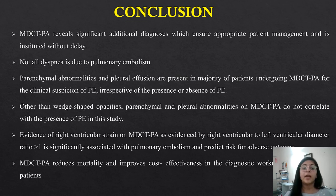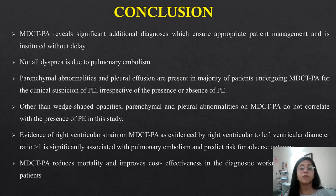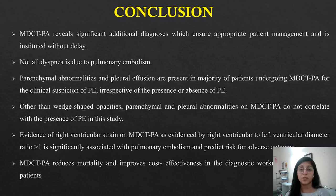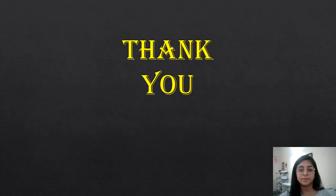In conclusion, MDCTPA reveals significant additional diagnoses ensuring appropriate patient management without delay. Not all dyspnea is due to pulmonary thromboembolism. Parenchymal abnormalities and pleural effusion are present in the majority of patients undergoing MDCTPA for clinical suspicion of PE, irrespective of the presence or absence of pulmonary embolism. Other than wedge-shaped opacities, parenchymal and pleural abnormalities do not correlate with the presence of PE. Evidence of right ventricular strain — RV to LV diameter ratio greater than 1 — is significantly associated with pulmonary embolism and predicts risk for adverse outcomes. MDCTPA reduces mortality and improves cost-effectiveness in the diagnostic workup of patients. Thank you.